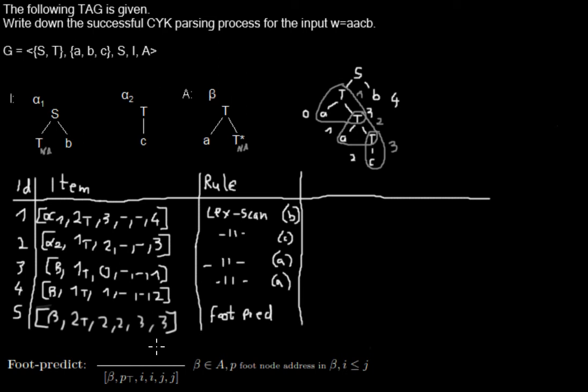Well this will make a little bit more sense in the ongoing parsing process, but the outer letters are supposed to be the span of the whole tree or of the whole item at the end, and the two numbers in the middle are the span of the foot node of the whole tree.